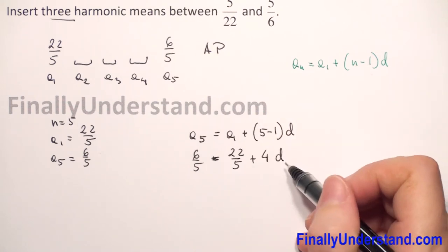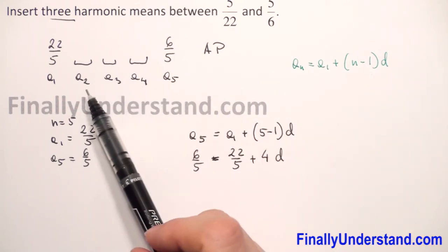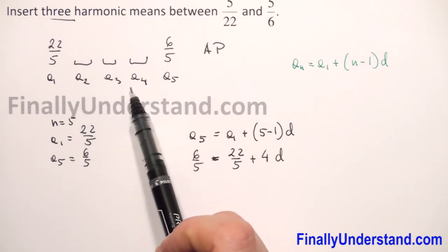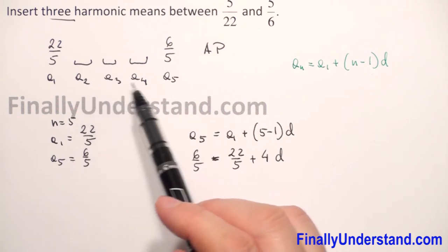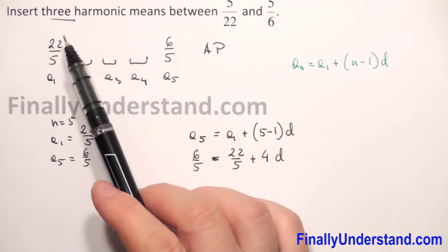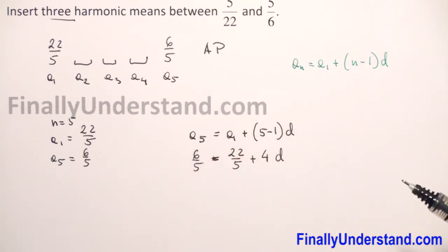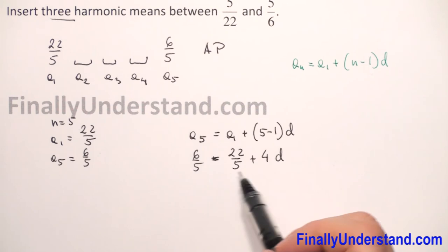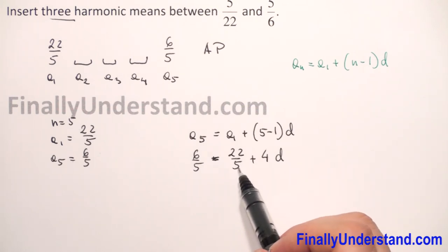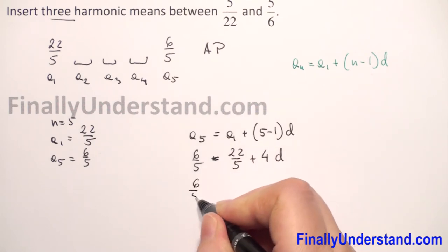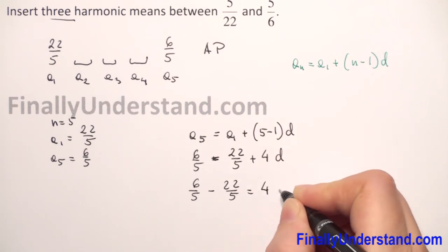Now we solve for d. Moving 22 over 5 to the left side, we get 6 over 5 minus 22 over 5 equals 4d. Since they have the same denominator, we copy the denominator and compute 6 minus 22, giving us negative 16 over 5 equals 4d.